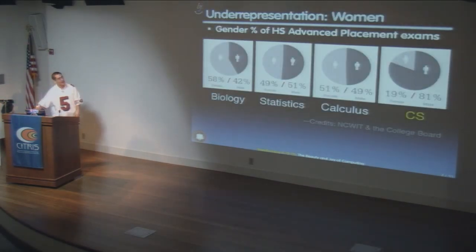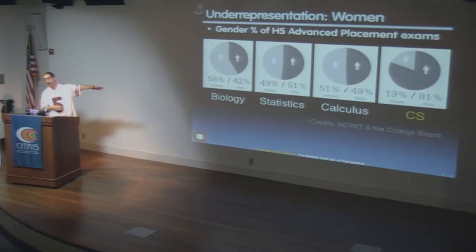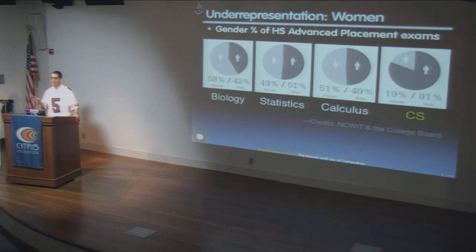Looking at underrepresentation: in AP exams, biology is 58% female, stats and calculus are roughly balanced — but computer science is 81% to 19%, the worst gender imbalance in the history of the Advanced Placement program. They've never had a gender imbalance that bad in any subject.